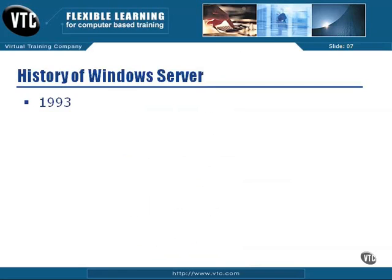First of all, let's talk about when it all started. Around about 1993, which seems an incredibly long time ago now when you look back at it, Microsoft introduced Windows NT Advanced Server. This was a basic network operating system server.